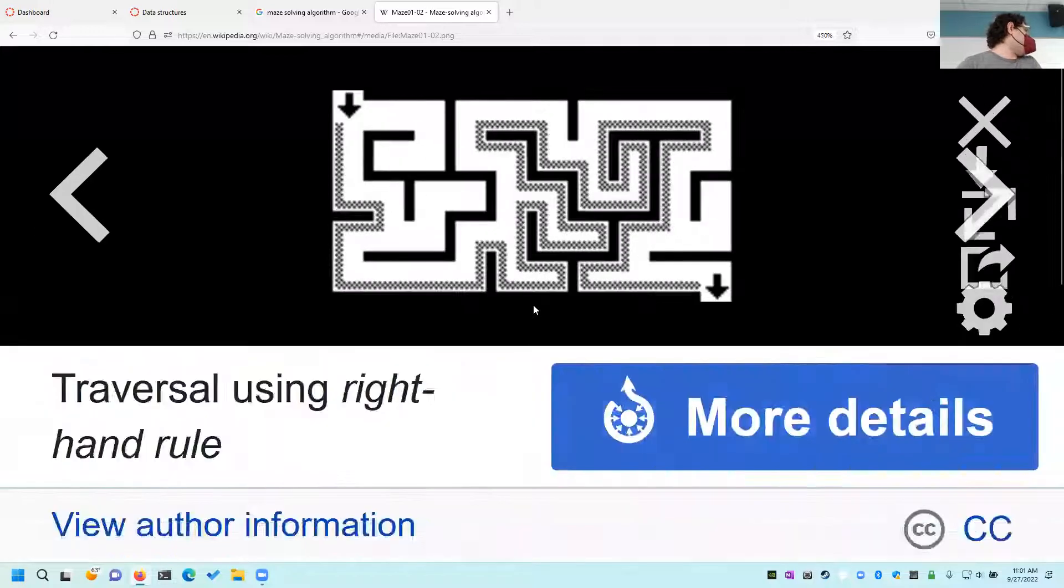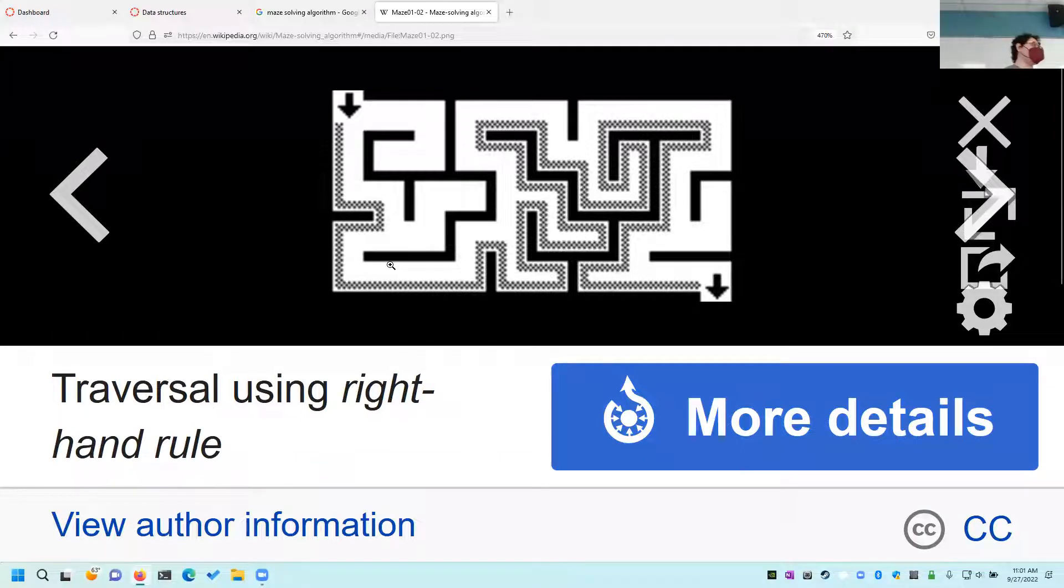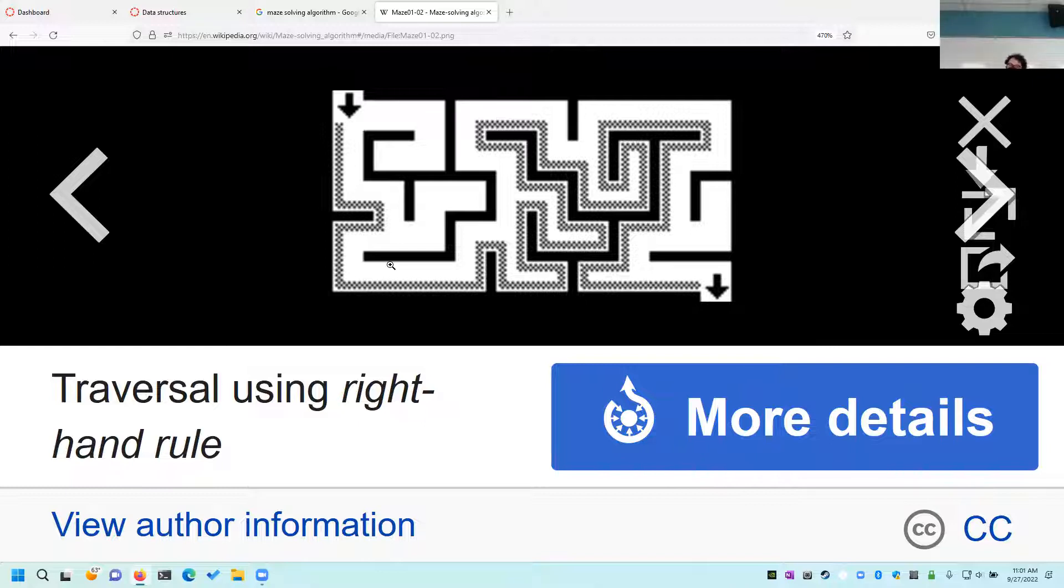The most basic algorithm for solving a maze that we can do is this right-hand rule, which is simply: if you want to solve a maze, slap your right hand on the wall—or you can do the left hand, honestly it doesn't matter—but you slap your hand on the wall and you just walk and don't let go of the wall. Here's our entrance and this simply follows the wall to solve the maze. If it hits a dead end, it just follows the wall out of the dead end.